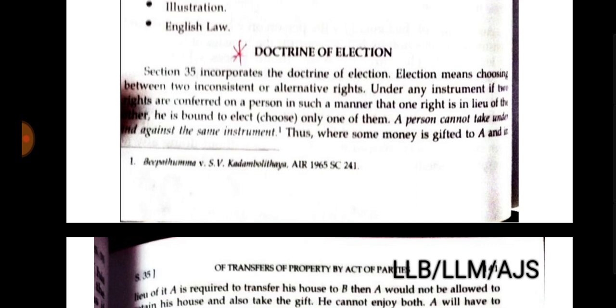Welcome to my channel. Today this video is about the Transfer of Property Act and the Doctrine of Election. Section 35 of the Transfer of Property Act incorporates the Doctrine of Election. Election means choosing between two inconsistent or alternative rights. Under any instrument, if two rights are conferred on a person in such a manner that one right is in lieu of the other, he is bound to elect — choose only one of them.